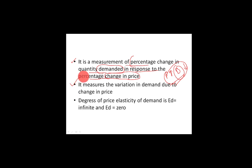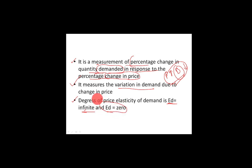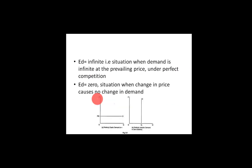So this is the elasticity of demand — it measures the variation in demand due to change in price. How much variation is there? Is it more or less? The degree of price elasticity of demand (ED) ranges from ED equal to infinity to ED equal to zero. I will explain these in detail. We can divide elasticity of demand into two ends: ED is infinite and ED is zero.